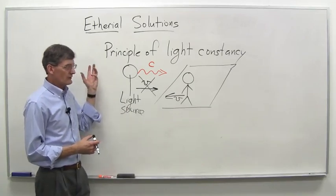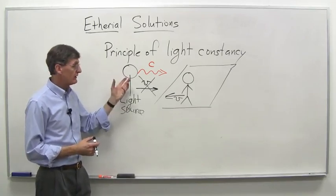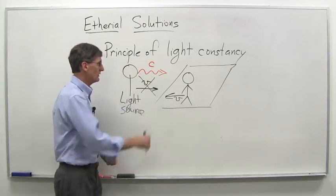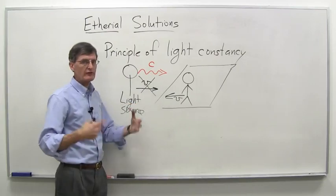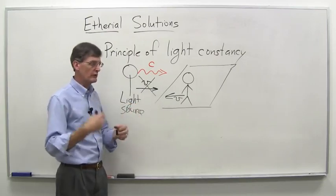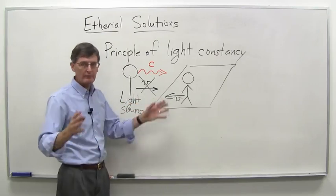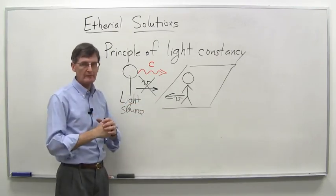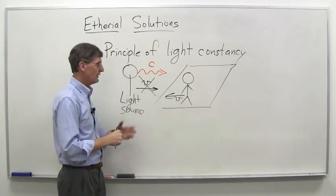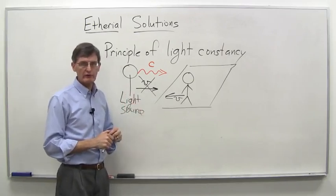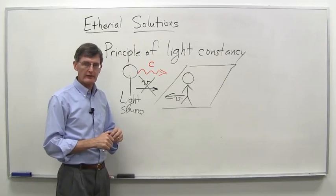So again, principle of light constancy C, plus the principle of relativity. The conclusion Einstein drew is that C, the velocity of light, is a constant no matter how you're moving. Whether you're moving toward the beam or away from the beam or sideways to the beam or however the beam is moving, you will always measure the speed of light as C. And again, that's going to have some very interesting and strange consequences which we'll get into starting next week.